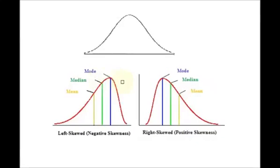One thing that is a little confusing is that skewness does not refer to the peak. So when you are figuring out skewness, don't look at the peak of the distribution — look at the tail. This is a long left tail so it is left skewed. This one to the right has a long right tail so it is right skewed.